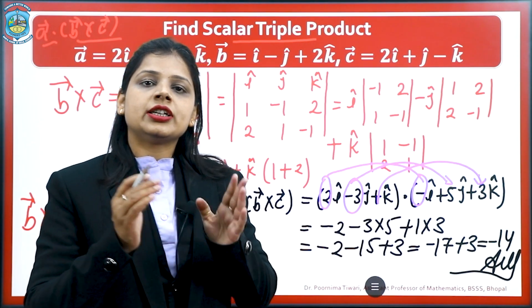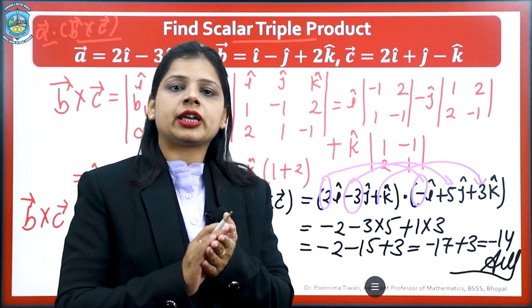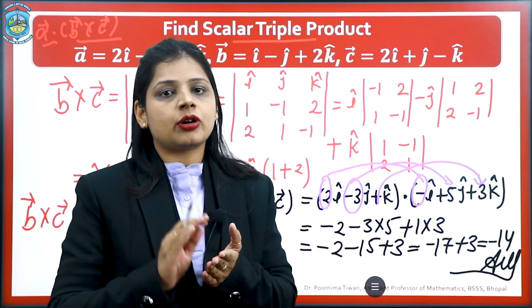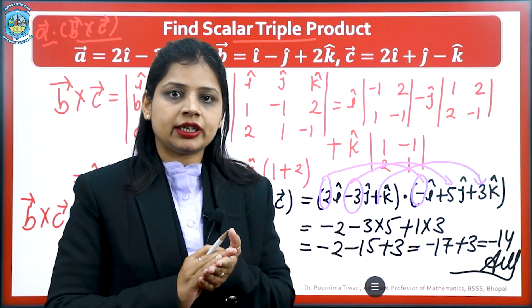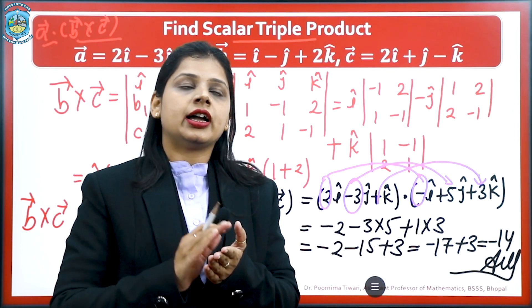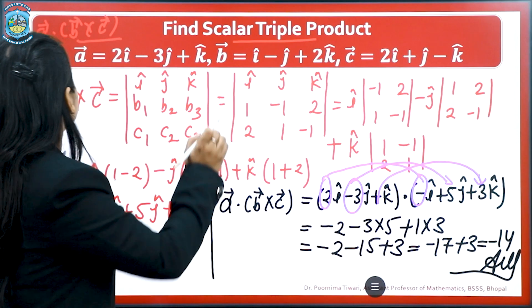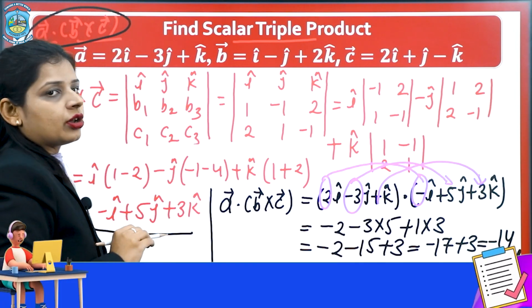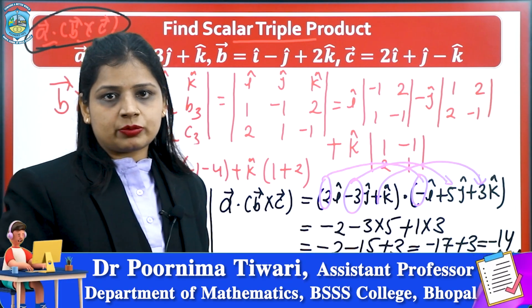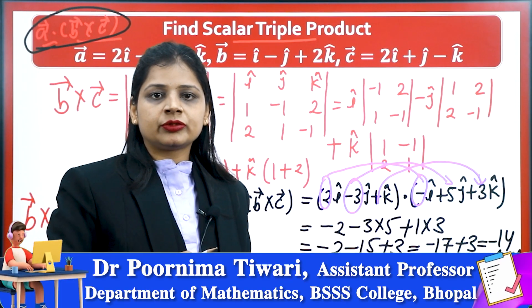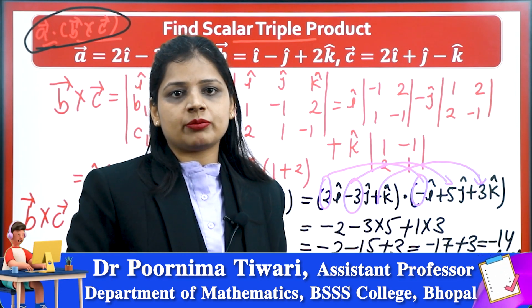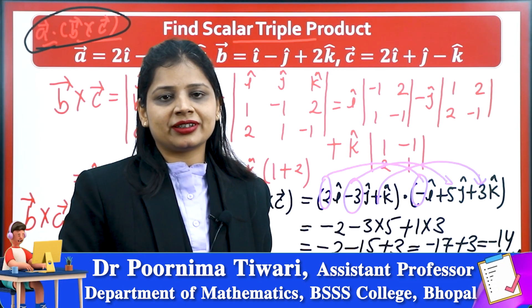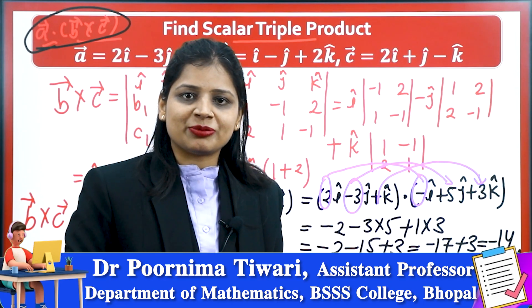So these are the two methods to obtain the scalar triple product — in terms of a determinant, and in terms of a combination of dot product and cross product. You may solve some more examples for better understanding of this topic. Thank you so much.